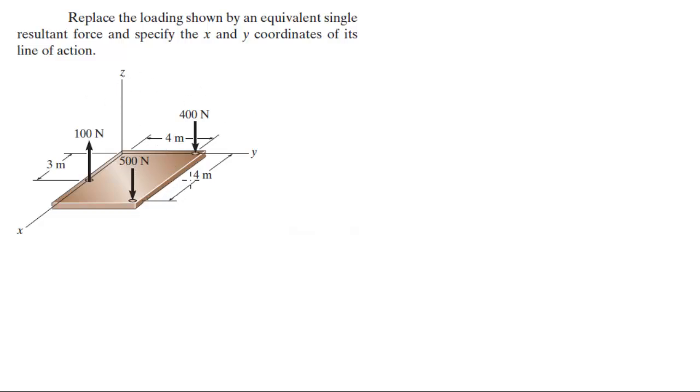On this plate you only got forces going up or down, you don't have any other sort of forces. So the sum of the forces is equal to 100 going up, 500 going down which is negative, and 400 going down which is also negative. So the resultant force is negative 800.